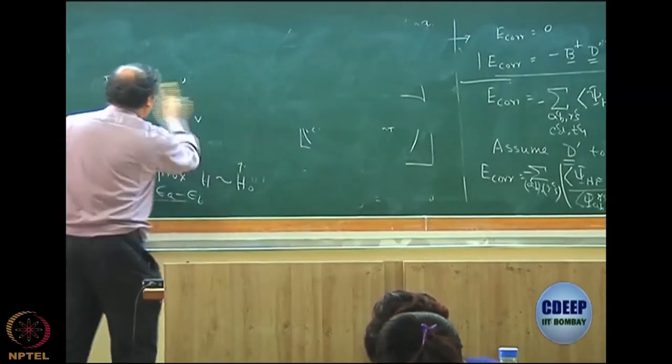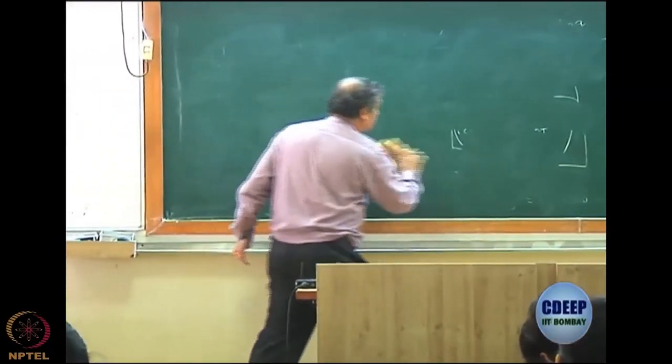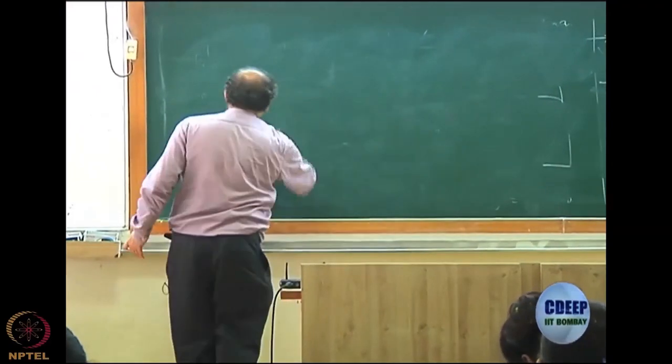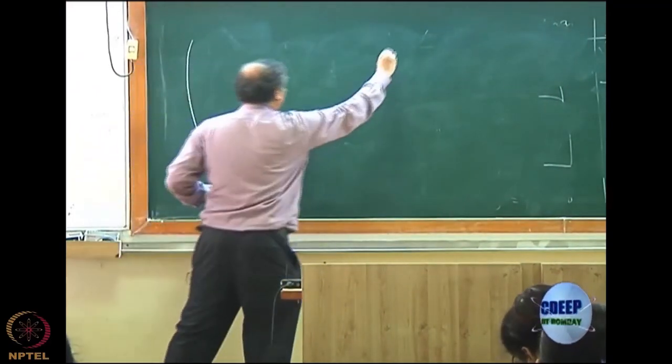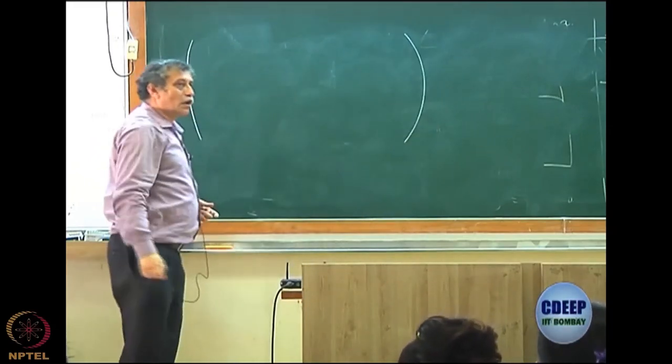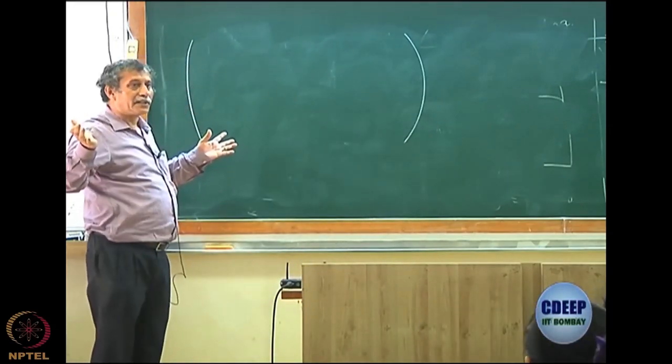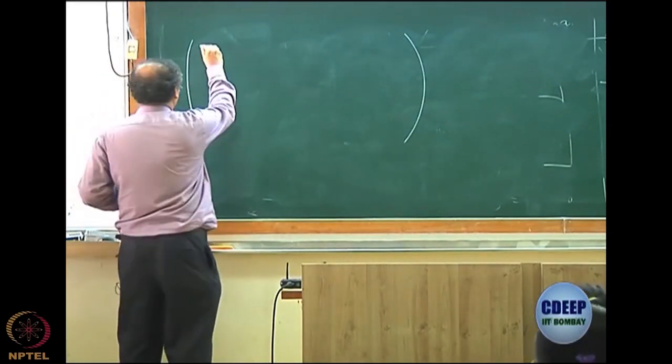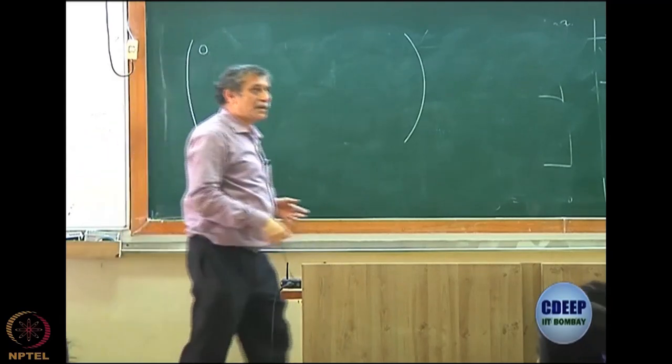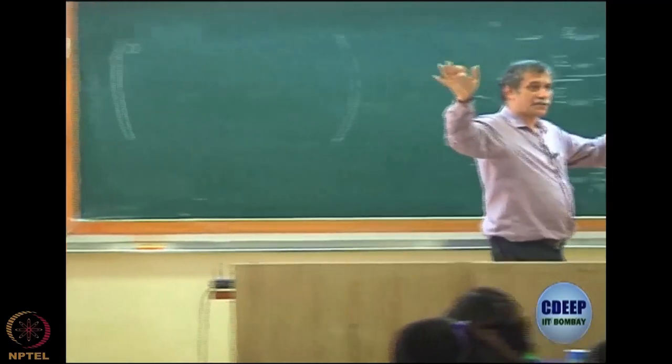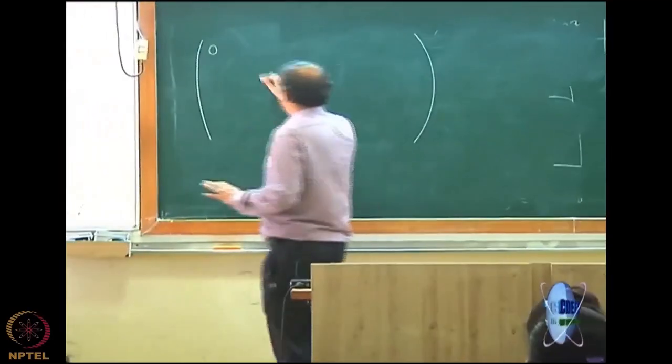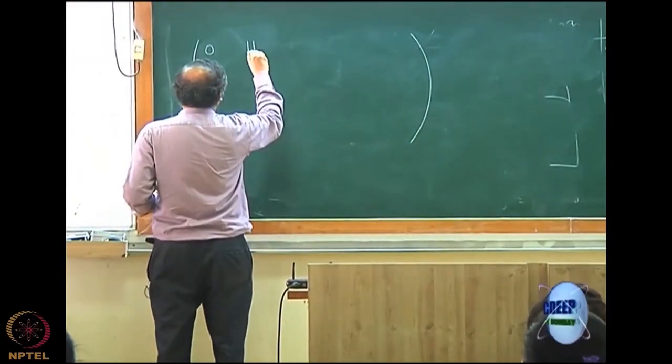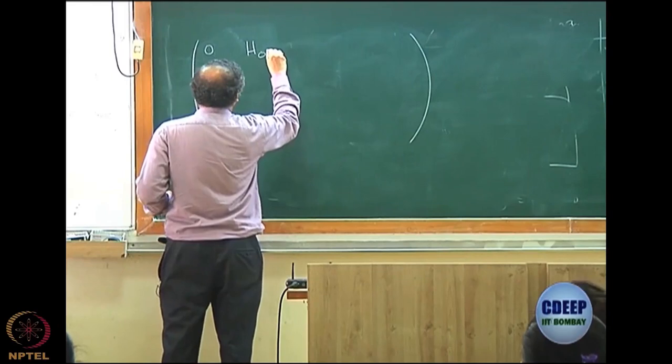All you need, forget about approximations, go back to the actual equation of CI. All you need is the matrix of the Hamiltonian. I am writing in terms of normal order. What is the first term? 0, H minus E Hartree-Fock, CI Hartree-Fock is 0. Just as it was before, and then I have, I am now writing in a more cryptic form, H0S.